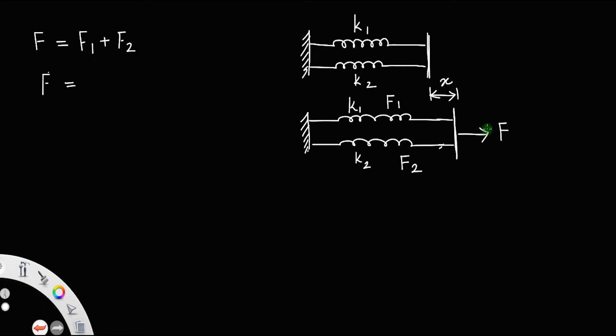So F1 will be, if you apply Hooke's law, then F1 is equal to k1 times x, the extension produced is x. So k1 x plus, in case of F2, it is k2 x. The extension remains the same, k2 x, or you can write F is equal to x times k1 plus k2.